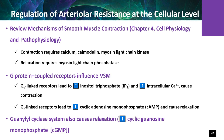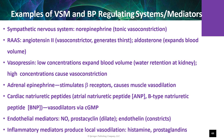Smooth muscle contraction requires calcium, calmodulin, and myosin light chain kinase; relaxation requires myosin light chain phosphatase. G-protein coupled receptors influence vascular smooth muscle tone. Norepinephrine is a sympathetic neurotransmitter mediating tonic vasoconstriction — a vital mechanism that maintains normal blood pressure, especially in an upright position. Drugs that block alpha-1 adrenergic receptors can cause very low blood pressure and severe postural or orthostatic hypotension.